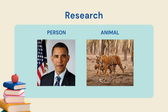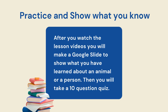The research we are going to do today — I will show you how to look for information about a person, which is a biography, and find information about an animal. And then at the end, you will choose either a person or animal to research. After you watch the lesson videos, you'll make a Google slide to show what you have learned about a person or animal. You'll get to pick one.